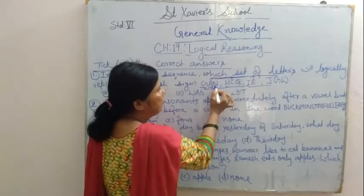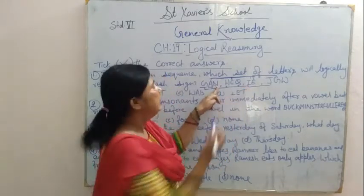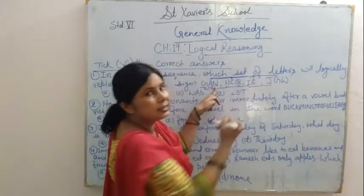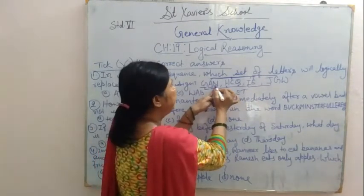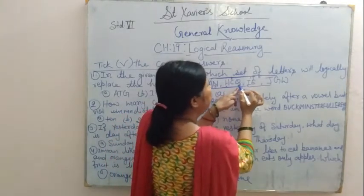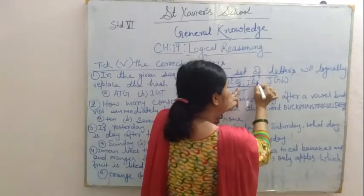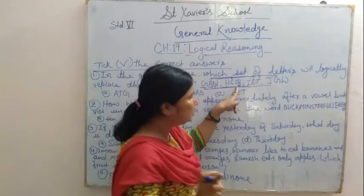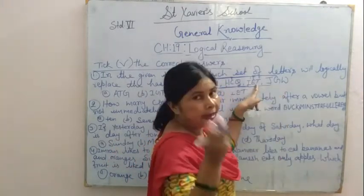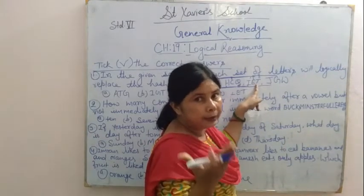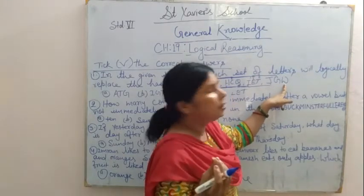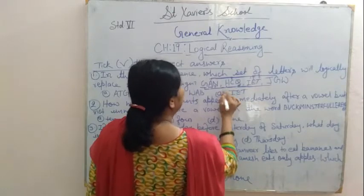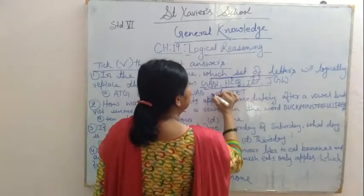Now the third letter: N. After N there is Q — the difference between these two letters is three positions. N is at position 14, Q is at position 17. So 14 plus 3 equals 17. And 17 plus 3 equals 20, which is the letter T. T is at position 20; add 3 to get position 23, which is W. So the answer is IET, and D is the answer of this question.